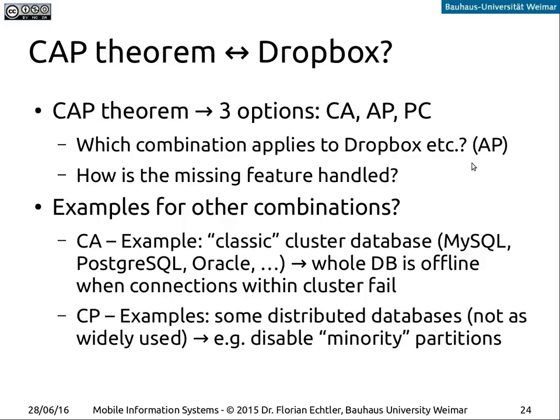So how does this relate to Dropbox? We can have three different combinations: consistency and availability, availability and partition tolerance, or partition tolerance and consistency. The combination which actually applies to Dropbox is availability and partition tolerance, meaning you will always be able to access the data even if you're offline, and it will also work while offline. What's missing is consistency, of course. In Dropbox, if you have conflicting updates, you will simply get a second copy of your data and will have to sort out yourself which one is the right one.